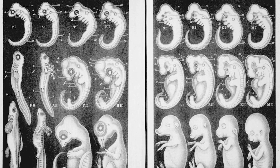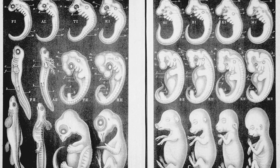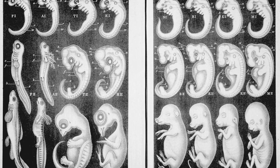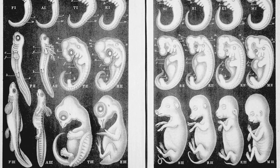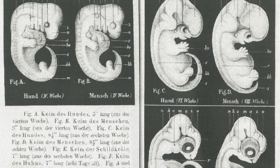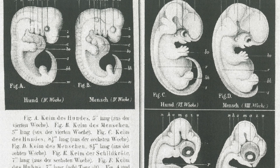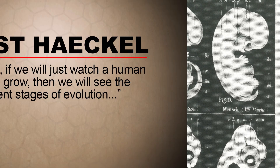To prove evolution was true, he came up with an idea that human embryos go through different evolutionary stages as they grow. According to Ernst Haeckel, a human embryo starts out in a one-celled stage, just as its ancient amoeba-like ancestor. And then he said it develops gill slits just like an ancient fish ancestor. And he said it has a tail just like an ancient ape-like ancestor.